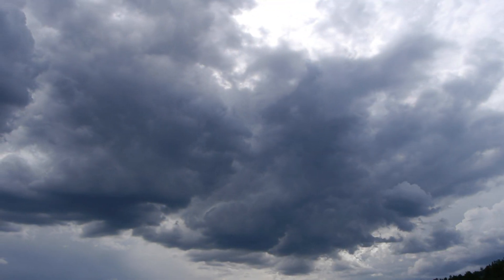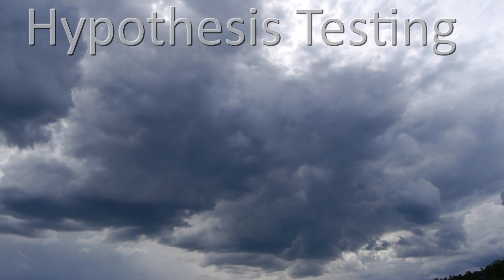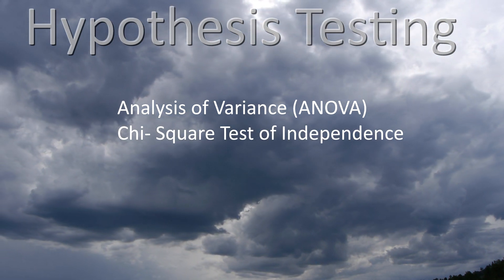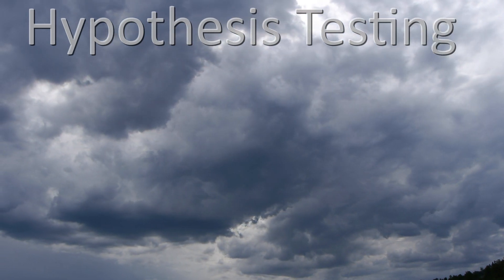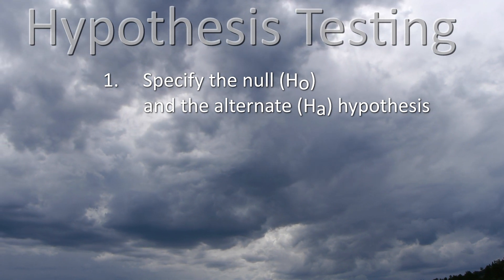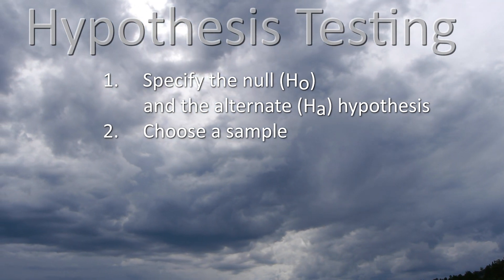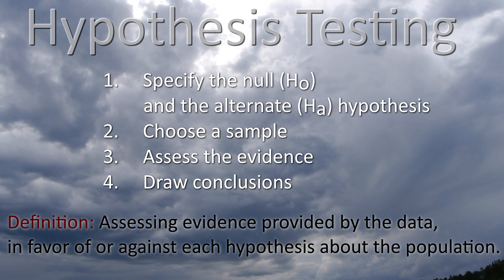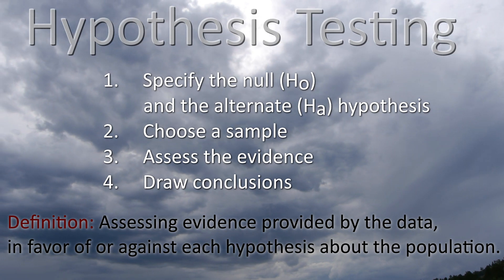Now it's time to begin talking about inferential statistics by describing the steps involved in hypothesis testing. Hypothesis testing is one of the most important inferential tools when it comes to the application of statistics to real-life problems. It's used when we need to make decisions concerning populations on the basis of only sample information. A variety of statistical tests are used to help arrive at these decisions — for example, the analysis of variance test (ANOVA) and the chi-square test of independence, to name a couple. But they all include the same basic steps: specifying the null hypothesis H₀ and the alternate hypothesis Hₐ, choosing a sample, assessing the evidence, and drawing conclusions. Statistical hypothesis testing is defined as assessing evidence provided by the data in favor of or against each hypothesis about the population.